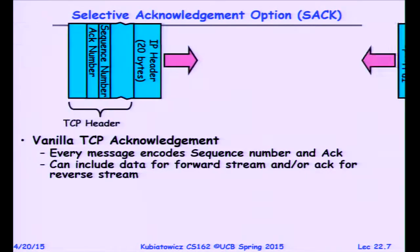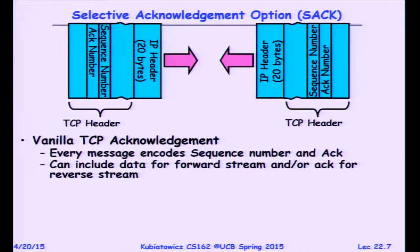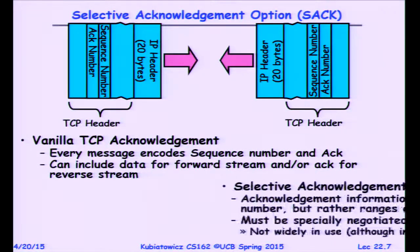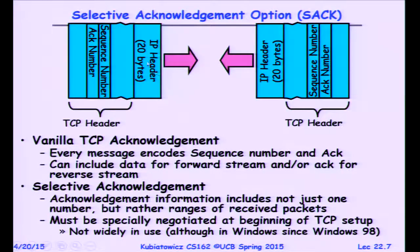Selective acknowledgement is something you can negotiate at connection setup. Vanilla TCP acknowledgement doesn't have a way to tell the sender what holes exist in the receive buffer — you have to assume a single hole and find out later. Selective ACK puts additional acknowledgement bytes in the header that say more about what's missing. It's been around for about a decade and depends on whether both source and destination support it.